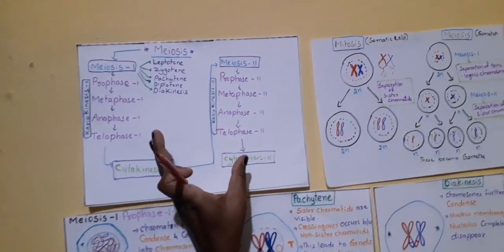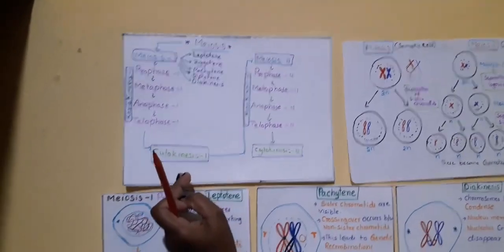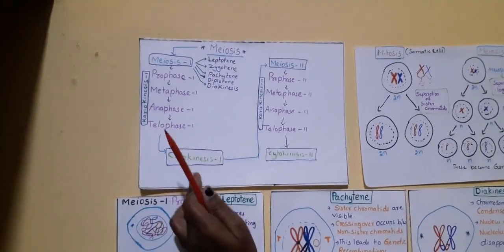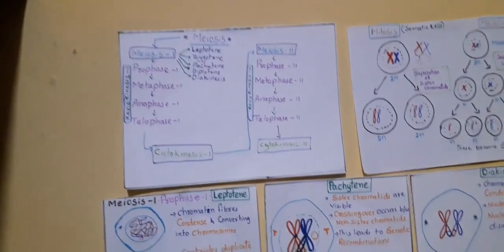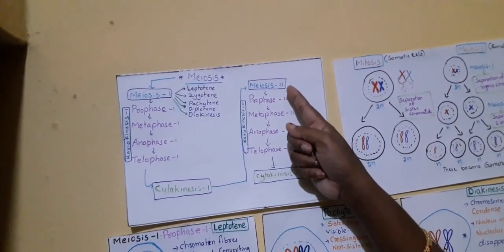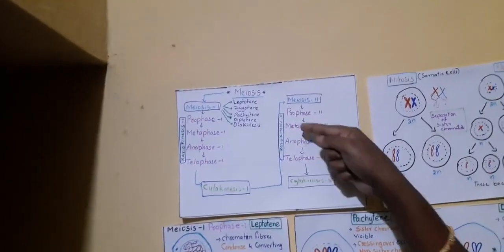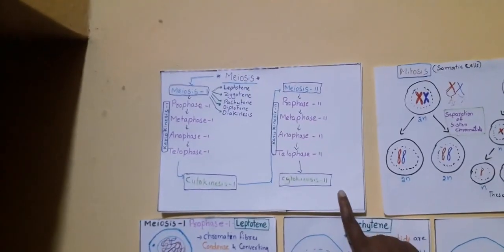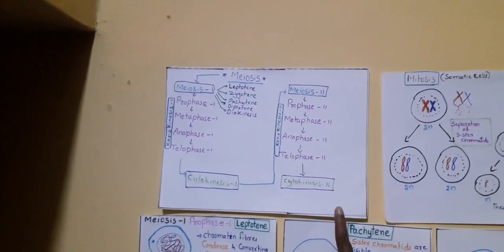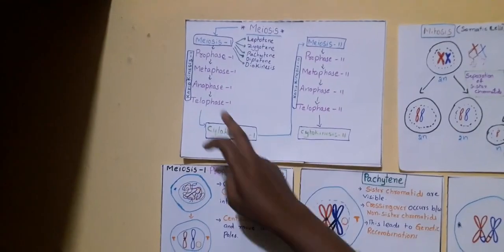In Meiosis 2 also, phases are the same: Prophase, Metaphase, Anaphase, and Telophase. Until Telophase 2, the karyokinesis 2 is completed. Later goes to cytokinesis 2, where division of cytoplasm takes place. Finally, we can see the formation of four haploid daughter cells. Let us see what is happening during these stages.